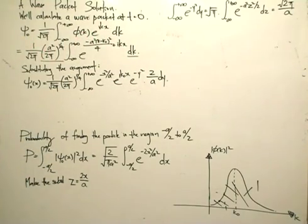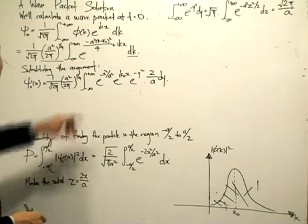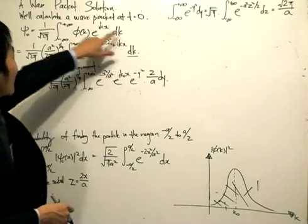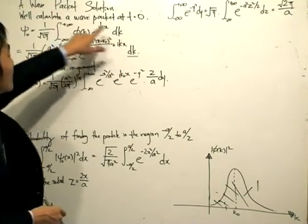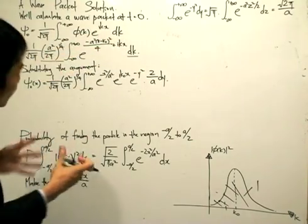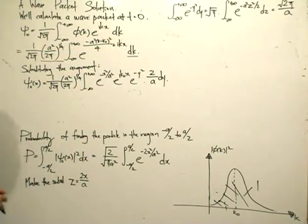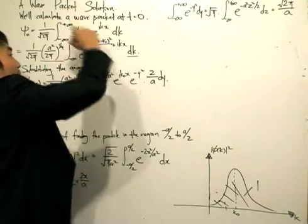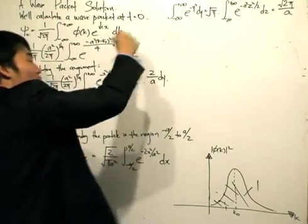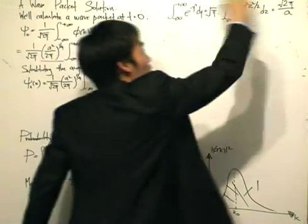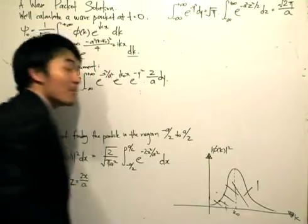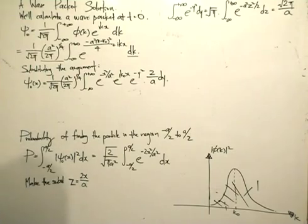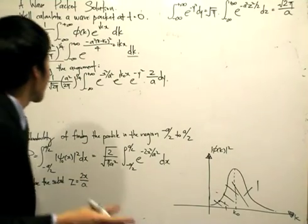What we can try is to somehow rewrite this argument to maybe a form that we can use to carry out the integration. If we can write it out so that it looks similar to one of these two forms, maybe we have a chance to carry out the integration.